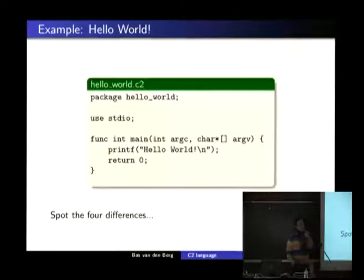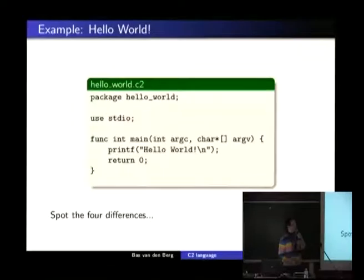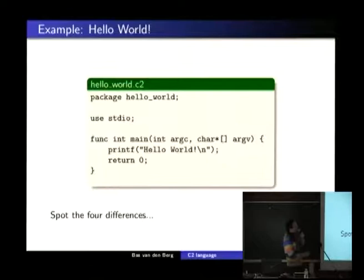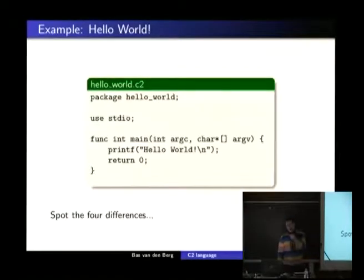The third thing is the function keyword — I found it very nice to prefix all functions with 'func'. All the types are also prefixed with the keyword 'type'. The last thing is the change to the type system: types are always continuous. So in C you have one part here and the other parts behind the variable name, but in C2 it's always a continuous string.